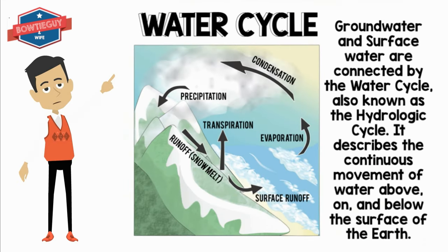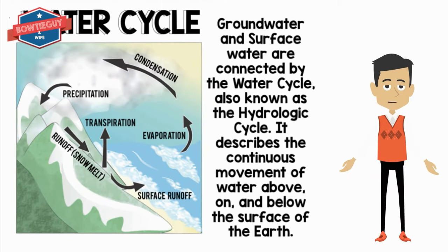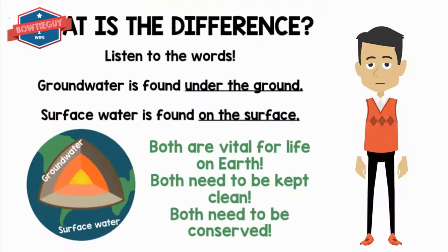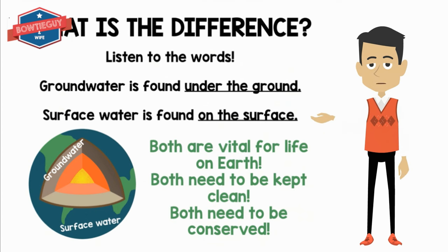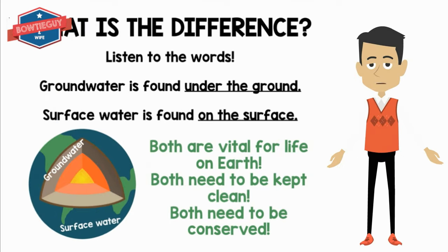Now let's talk about the water cycle. Groundwater and surface water are connected by what is known as the water cycle, also known as the hydrologic cycle. It describes the continuous movement of water above, on, or below the surface of the earth. Groundwater is found under the ground; surface water is found on the surface. Both are very important for life on earth, both need to be kept clean, and both need to be conserved — which means that we need to use the water wisely.